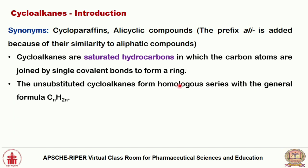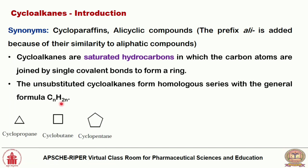The unsubstituted cycloalkanes form a homologous series with the general formula CₙH₂ₙ. We know that the alkanes general formula is CₙH₂ₙ₊₂, so that plus 2 we cannot observe in the cycloalkanes — the general formula for cycloalkanes is CₙH₂ₙ.